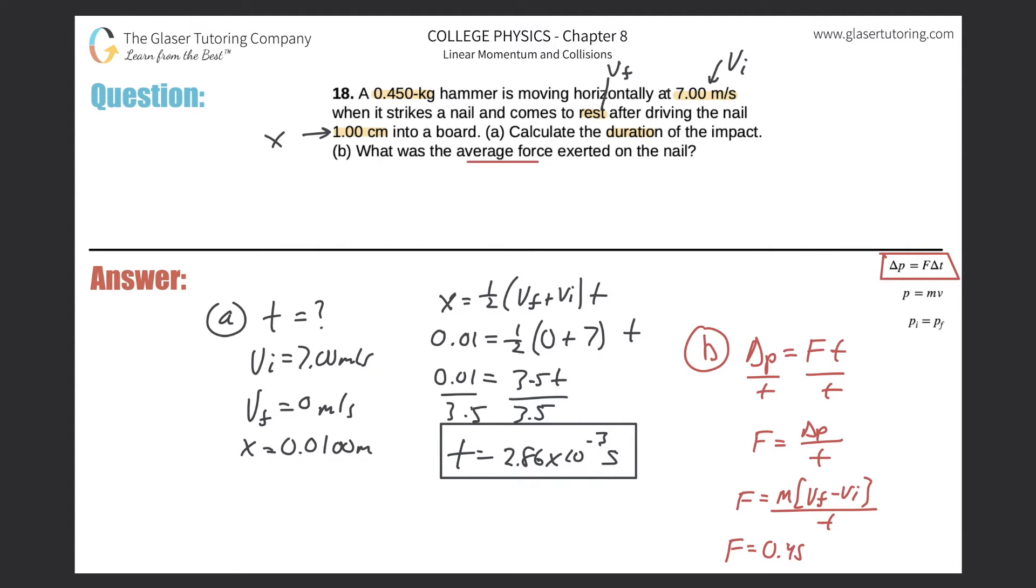The mass of the hammer is 0.450, the final velocity of the hammer is zero, the initial velocity of the hammer was 7 meters per second. I'm just going to move this up a little bit, and then we're going to take this value and divide out the time over which it took to change that hammer's momentum. So this is 2.86 times 10 to the minus 3.